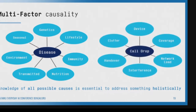I can think about a call drop in a telecom network that can happen because of multiple reasons — whether it's a device problem, there is too much clutter, there's too much load on the tower, there is no cell tower nearby, or there are too many cell towers nearby and the phone is confused which one to connect to.